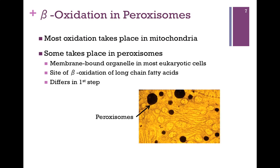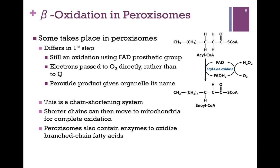Most oxidation takes place in the mitochondria, but some takes place in a separate organelle called a peroxisome. Here we have an electron micrograph where the dark areas represent the peroxisomes. It's membrane-bound, a separate vesicle within the cell, and most eukaryotic cells have them. This is where we process long-chain fatty acids, and it differs in that first step. It's still an oxidation — we still oxidize to convert to an unsaturated trans bond.